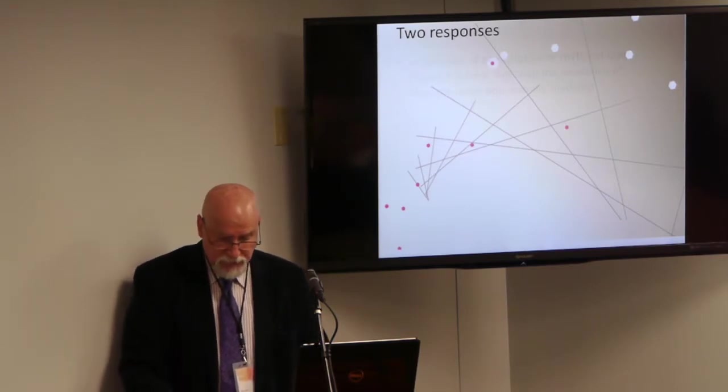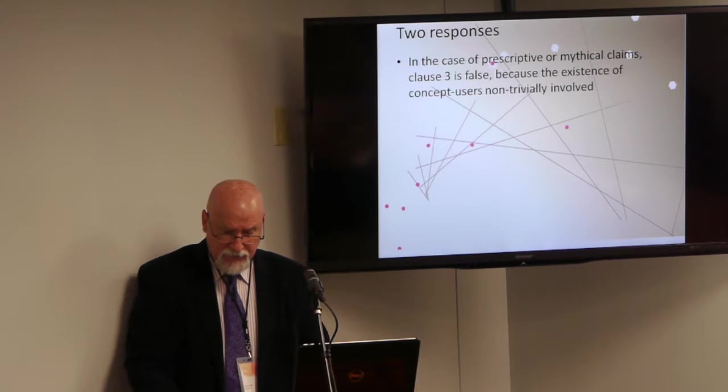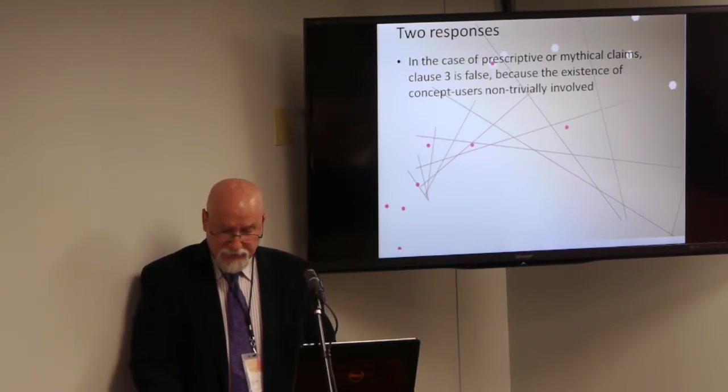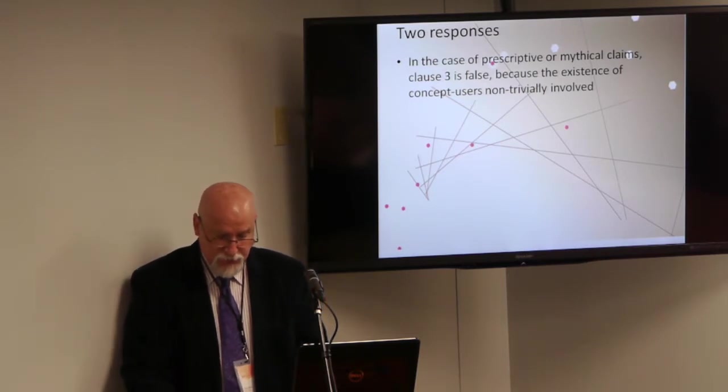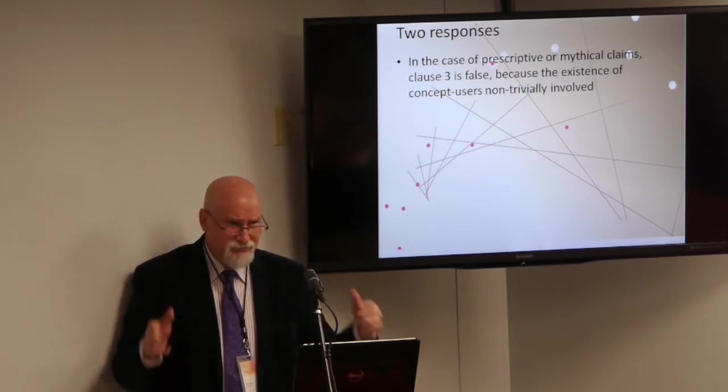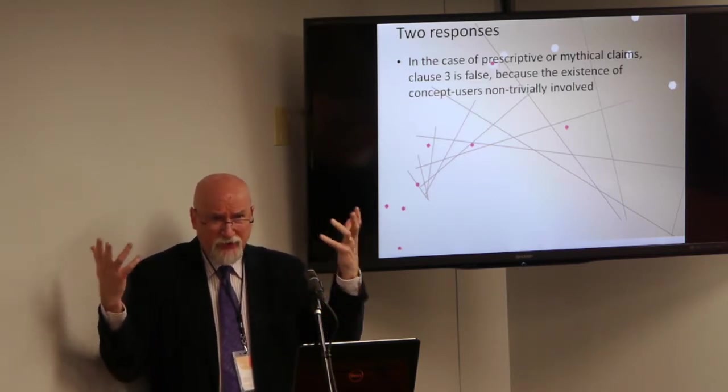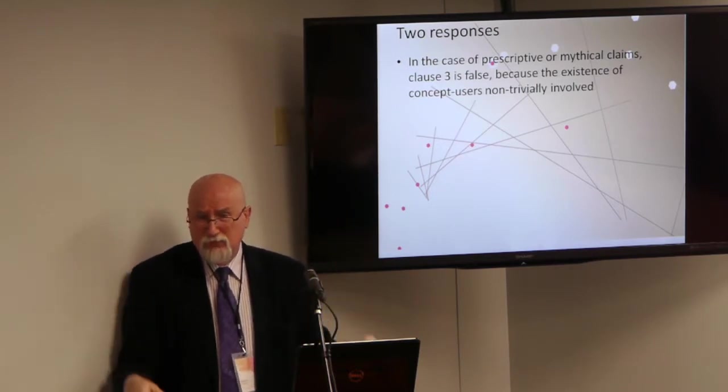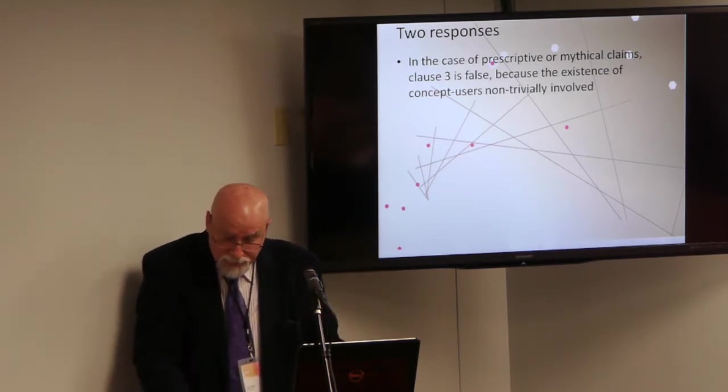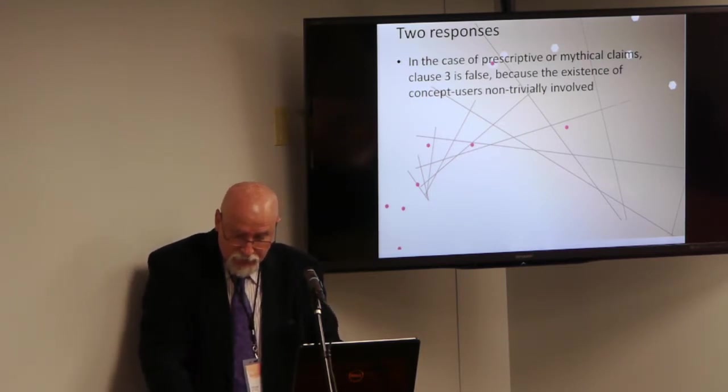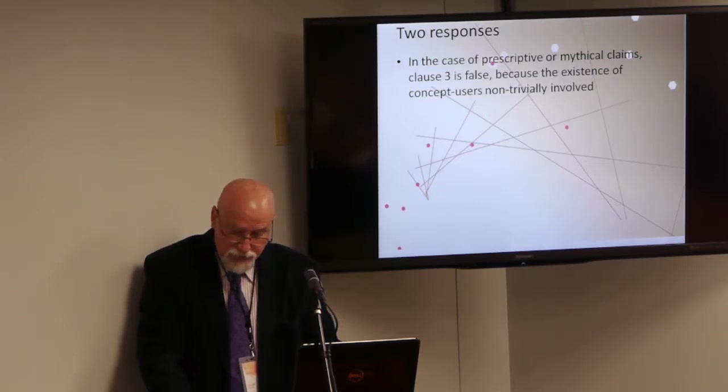I can envision two responses here. One is that there is a difference between alethic modal claims about mind-independent objects and either prescriptive claims or claims about unicorns. Because in the latter two cases, the existence of concept users is non-trivially involved in the truth conditions of the claims. So that the third clause of the analysis does not, in such cases, turn out to be true. Because, you know, unicorns. If there weren't people to think of unicorns, well, they still wouldn't exist, as far as I can tell. So, if there were no concept users, there would be no agents and no prescriptive claims would be true or state facts. If there were no concept users, they would not even be the concept of a unicorn. And since there are no unicorns, nothing about unicorns would be true.